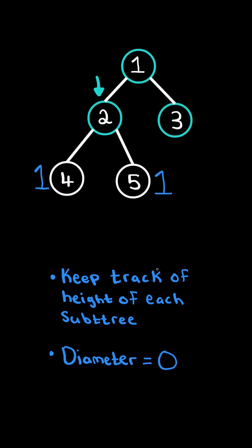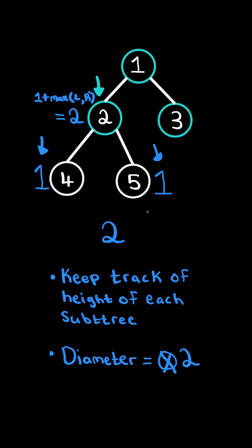Now let's consider the recursive step on node 2. We get the height of the left subtree and the right subtree, and we add them together, and we update the diameter if it's greater. And now we need to return the height of its subtree, which is equal to 1 plus the max of the left subtree or the right subtree's height. In this case, the height of this node is 2.